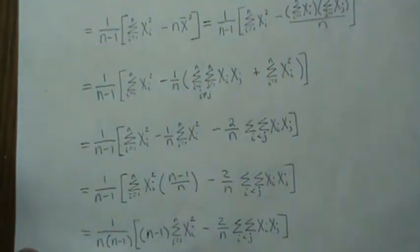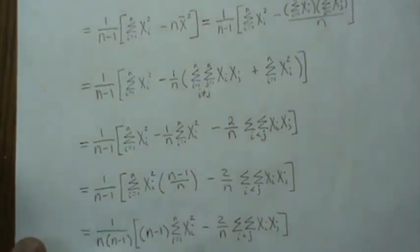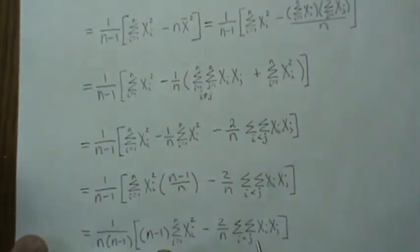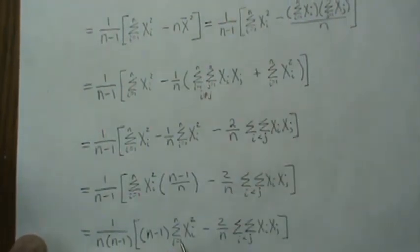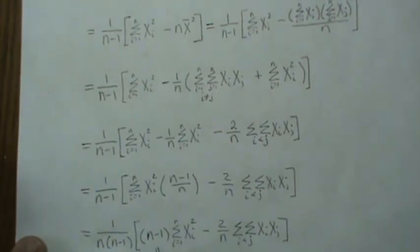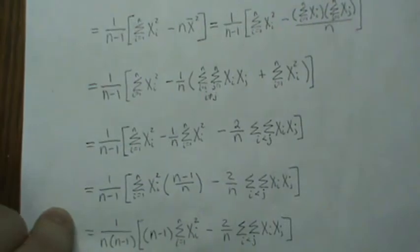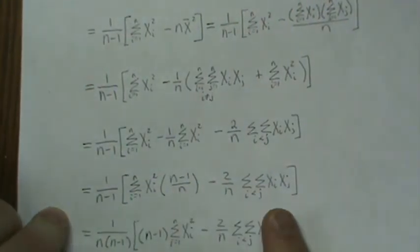Now this is sort of looking like the original. Oh, that n should be gone. Darn it. Because we factored it out, so it's just 2. Now this is sort of looking like the original where it's i less than j, but not this. So let's deal with this piece here only. So there's n minus 1 sum of xi-bar-squared. Okay.